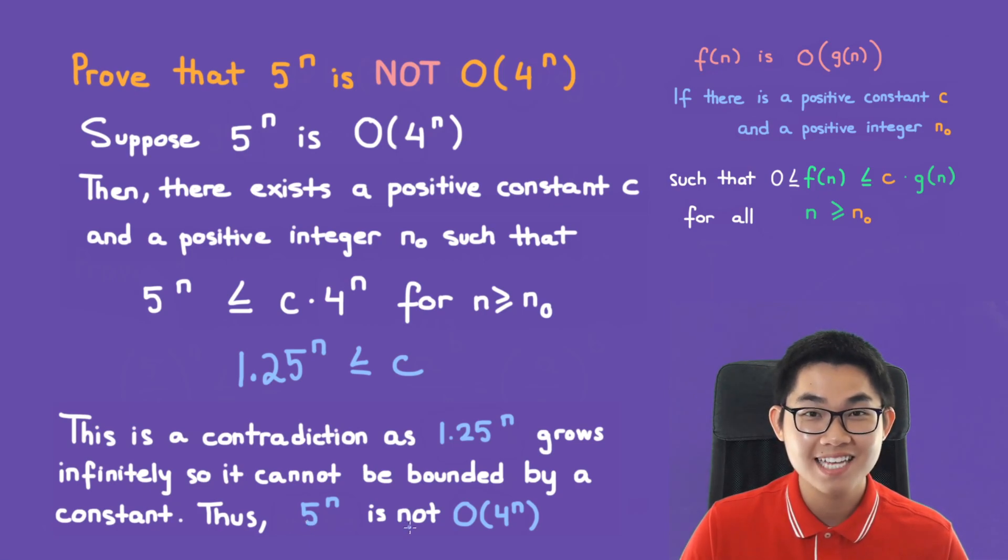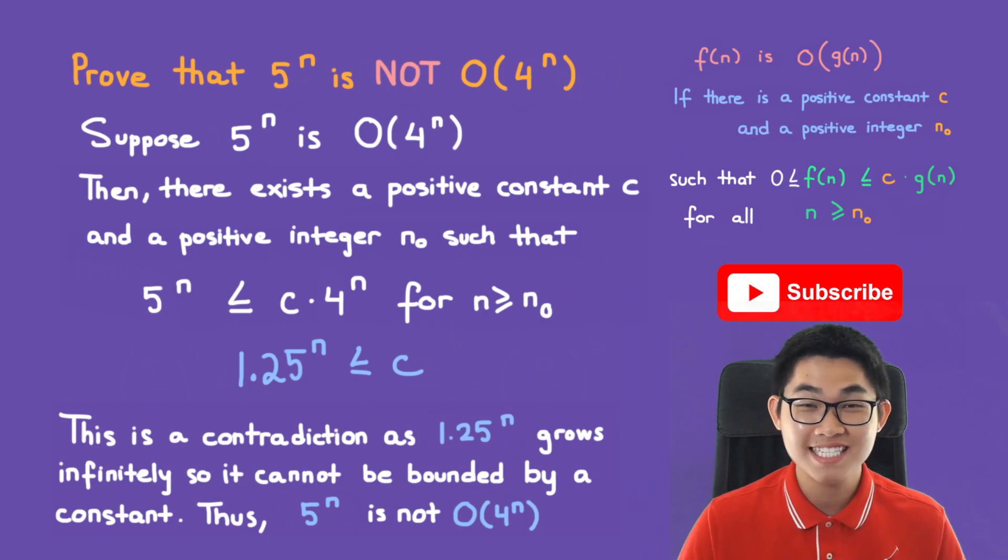And because of this, 5 to the power of n is not O of 4 to the power of n. So that's basically it for today.